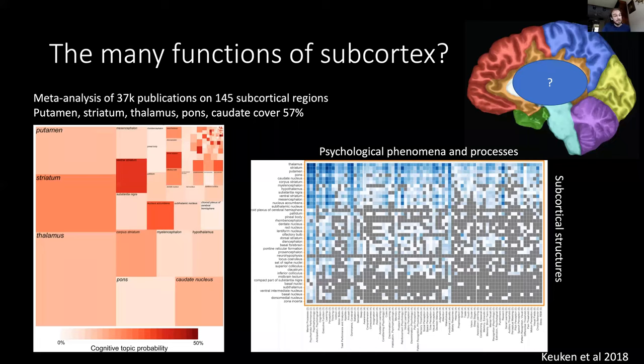On the right you see an attempt to map functions on the x-axis to structures on the y-axis, which gives this very scattered overview. There are a lot of cognitive functions attributed to subcortex, but there's no clear mapping between functions on the one hand and structures on the other.